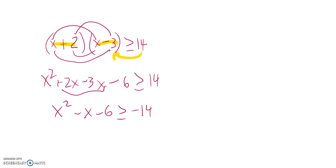I don't know where that negative came from. Get it out of there. I think I was thinking ahead because now I have to subtract 14 from both sides. I do that. I get X squared minus X minus 20 greater than or equal to 0.